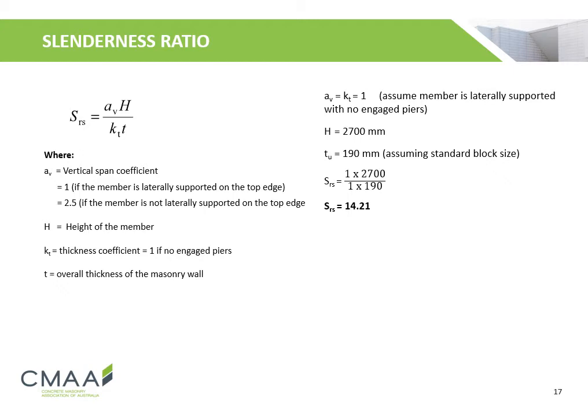The slenderness ratio is given by the equation shown, where AV is the vertical span coefficient, H is the height of the member, KT is the thickness coefficient, and T is the overall thickness of the masonry wall. As our wall is loaded by a concrete slab, we will use the equation given. AV and KT are both 1, as we assume the member is laterally supported with no engaged piers. With a wall height of 2.7 meters and a unit thickness of 190 millimeters, the slenderness ratio is calculated to be 14.21.